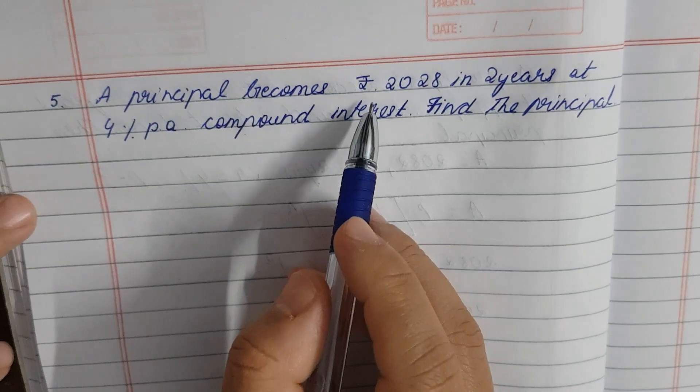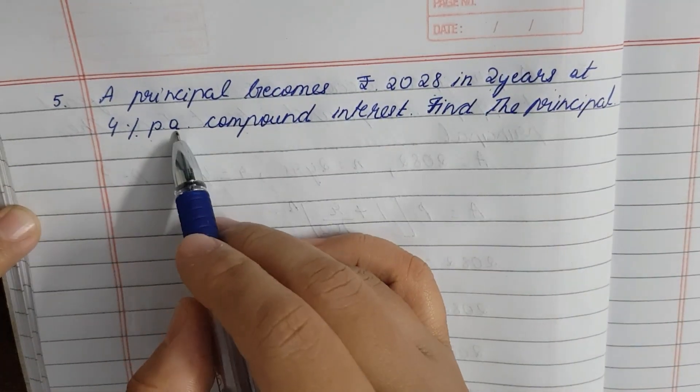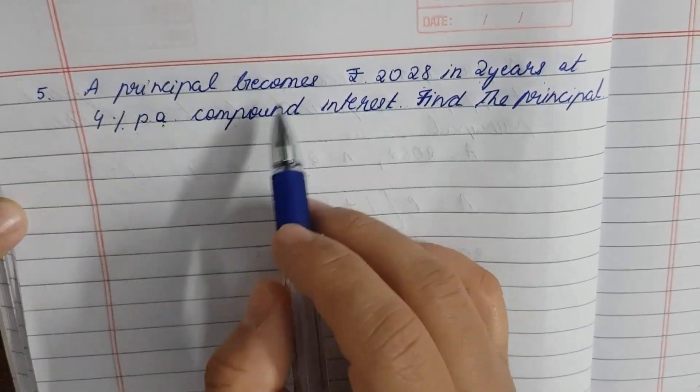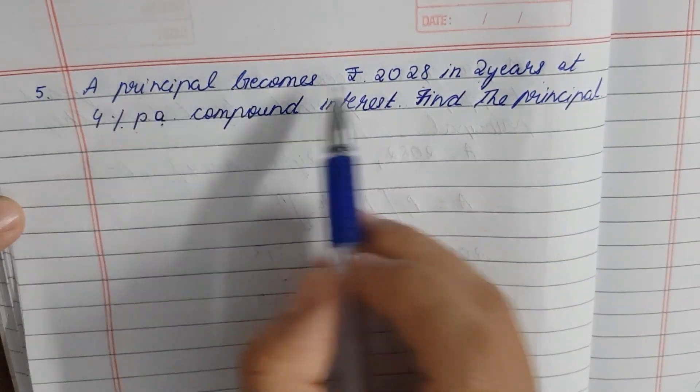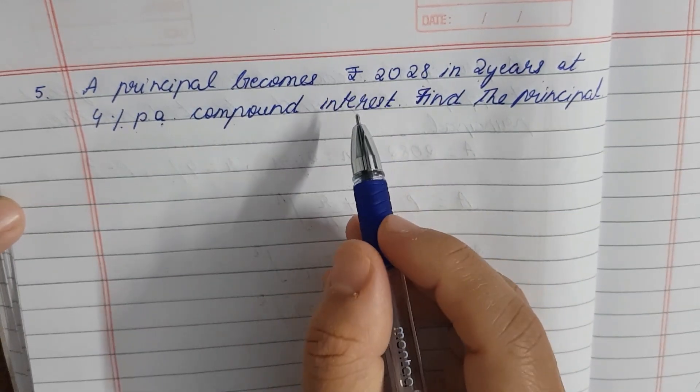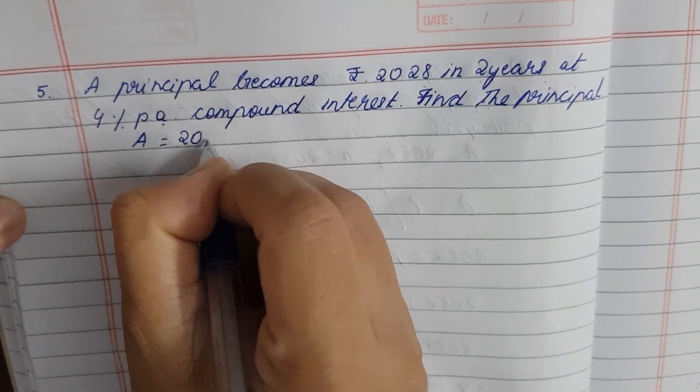A principal becomes Rs. 2028 in 2 years at 4% per annum. So a principle becomes 2028. That is why it is becoming 2028. So this is what we call the amount. So amount is 2028.